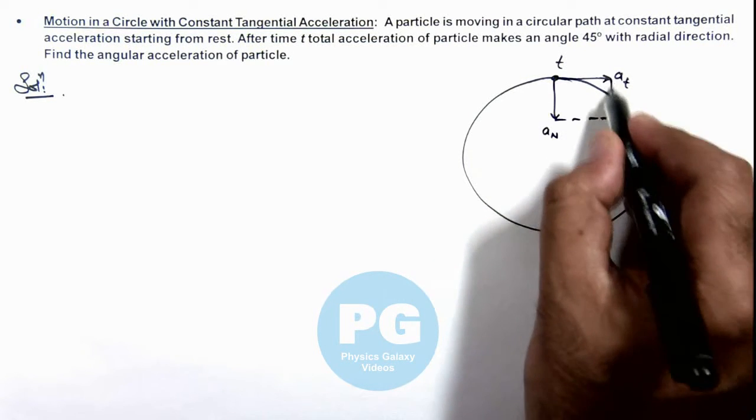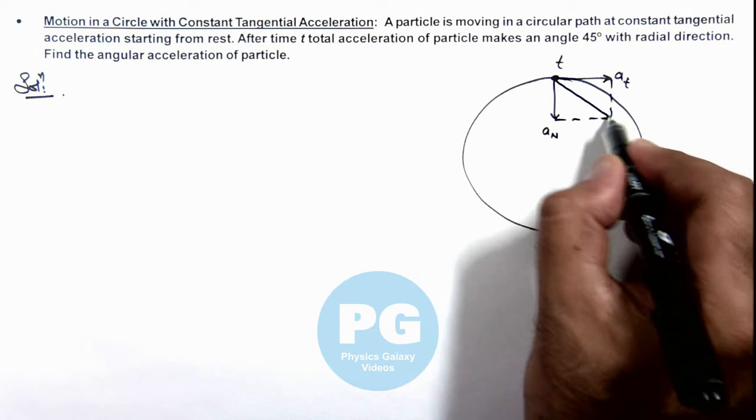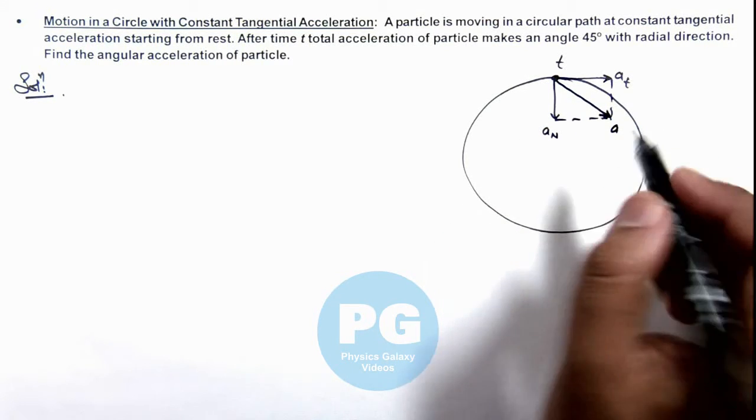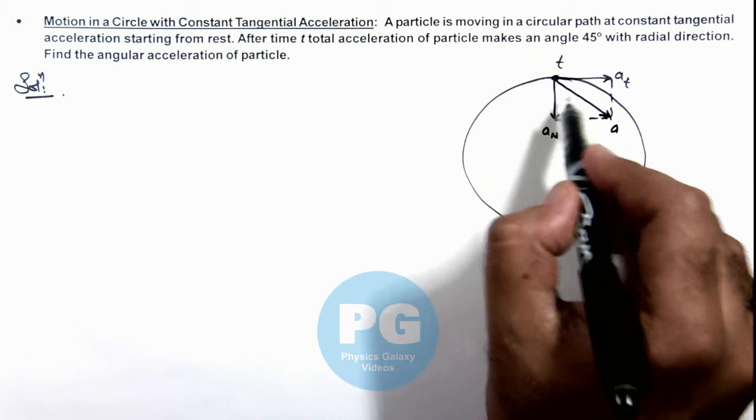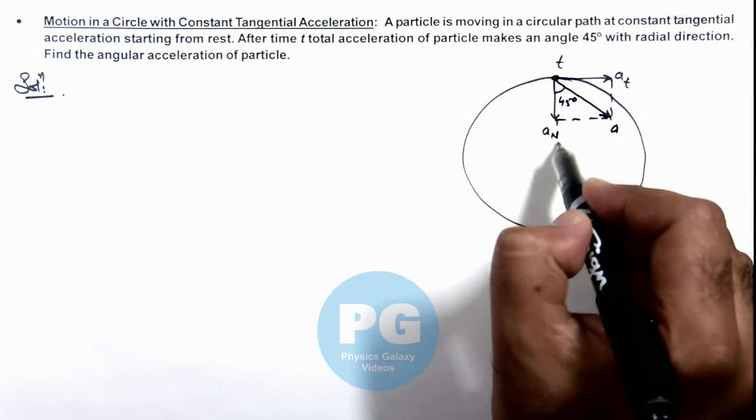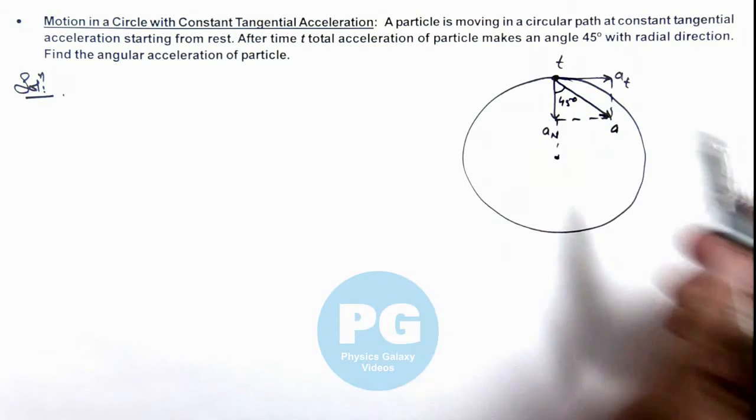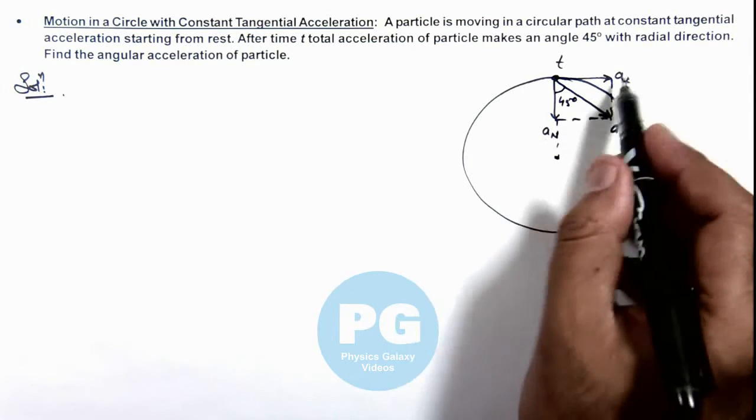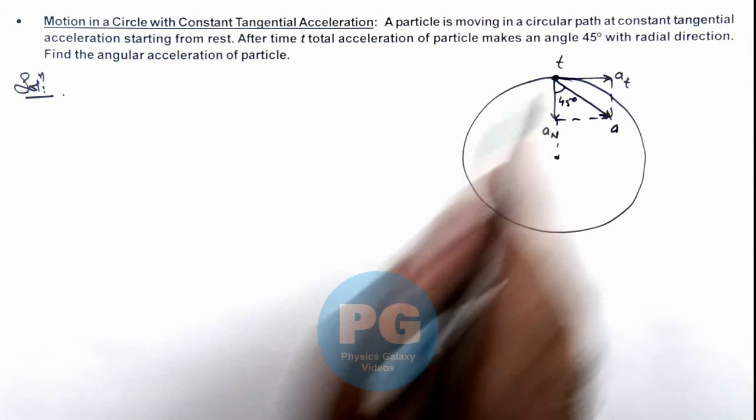The resulting acceleration, or total acceleration of the particle, would be acting here. We are given that it makes an angle of 45 degrees with the radial direction. This implies the normal and tangential accelerations must be equal at this instant.